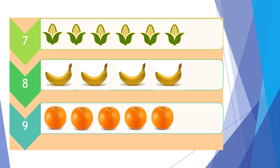Moving on to the next three questions — question 7, 8, and 9. To see how many sweetcorns are there, how many bananas are there, and how many oranges are there. Again we count them in the tally systems and our 10 seconds start now.